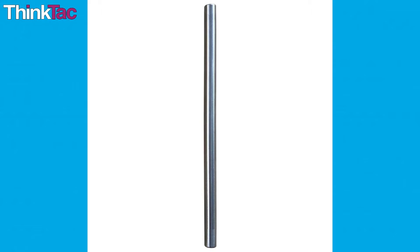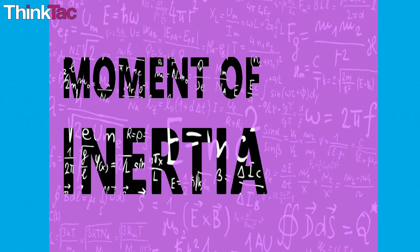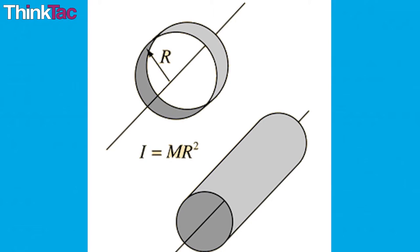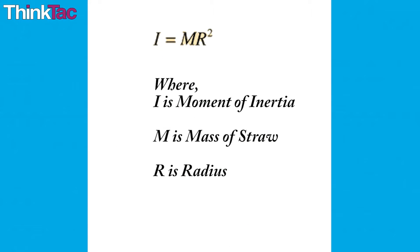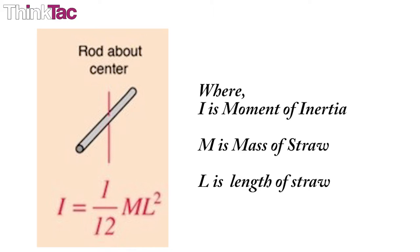Assuming the straw is a hollow cylinder, calculate the mass of the straw given the moment of inertia for a hollow cylinder along its perpendicular axis is given by the following equation, where m is the mass of the straw, r is its radius, and l its length.